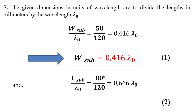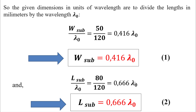For the length, we divide the length of the substrate by lambda zero: 80 millimeters divided by 120 millimeters equals 0.666 lambda zero. So this is the width and length of the substrate expressed in function of lambda zero.